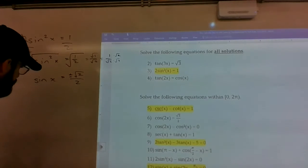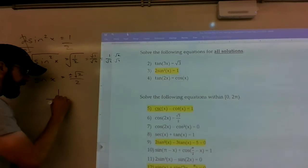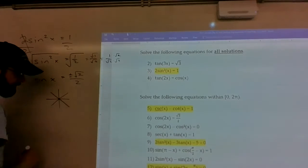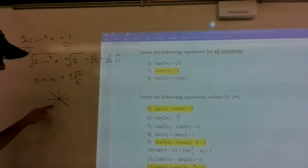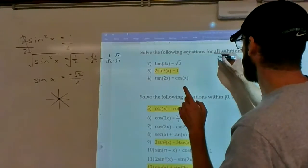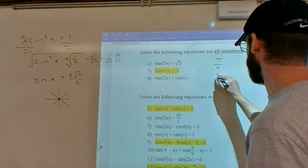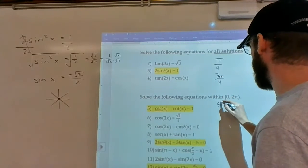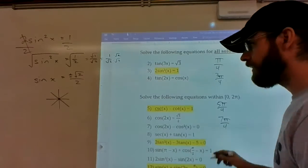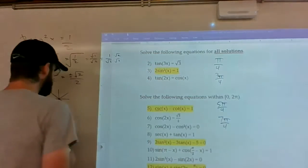Hopefully this jumps out at you guys as a unit circle value. This was the one that occurred when you had 45 degree angles. Those are the π/4 values. So if you remember, π/4, 3π/4, 5π/4, and 7π/4 were the four 45 degree angles that exist in the unit circle.